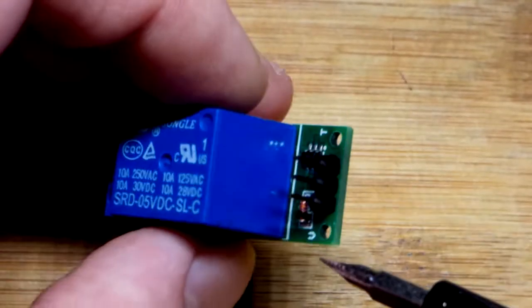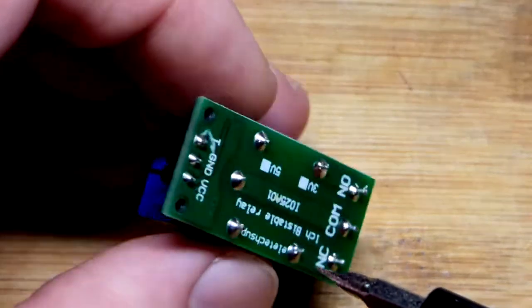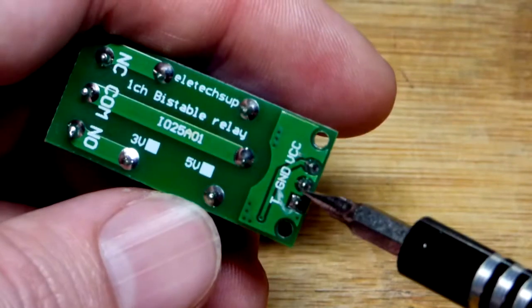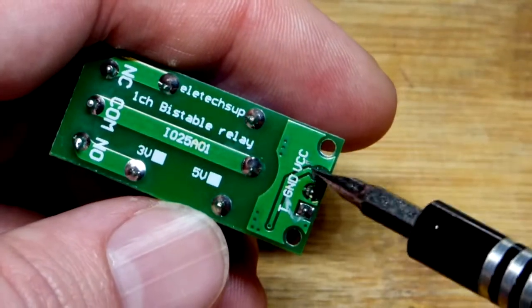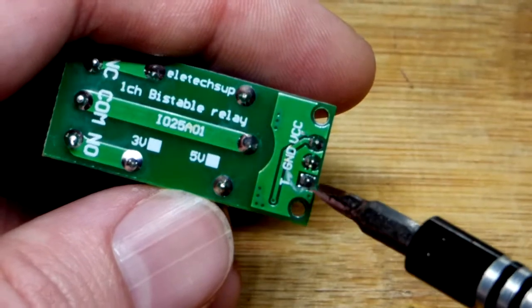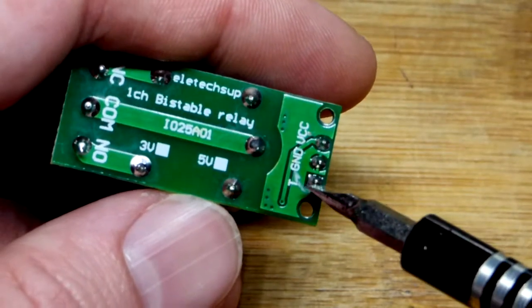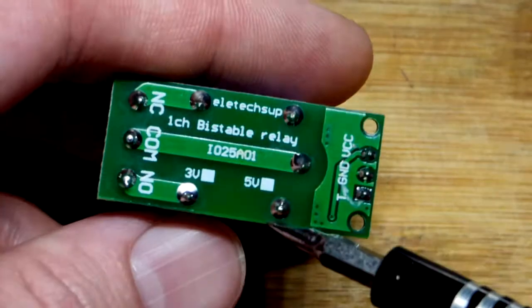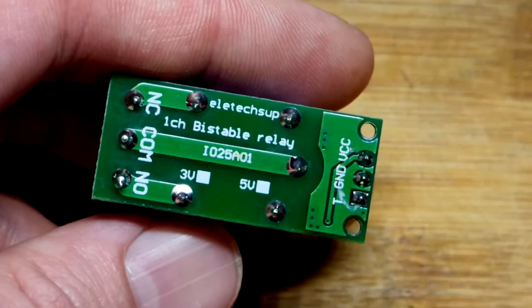We have these three jumpers here, pins, whatever you call them. You power the module here and this T right there is the signal. I don't know why it says T, but that's the signal you give it telling it which position to go into.